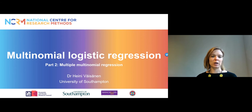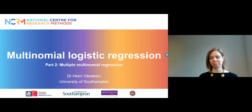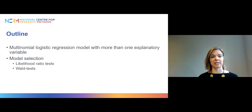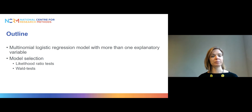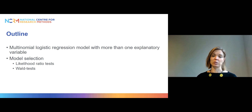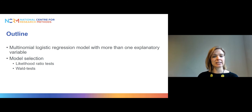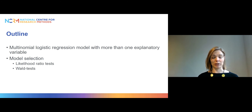If you haven't watched part one yet, please watch that video first before embarking on this one. The outline of today's presentation is that we will look at a multinomial logistic regression model with more than one explanatory variable, and then we will talk about model selection. We will look at how we can use likelihood ratio tests and Wald tests to assess statistical significance and conclude which variables to keep in our model.